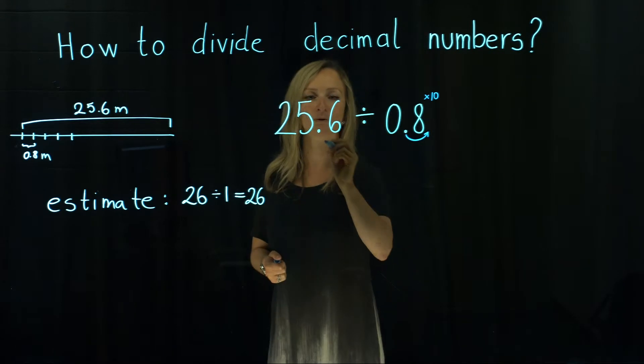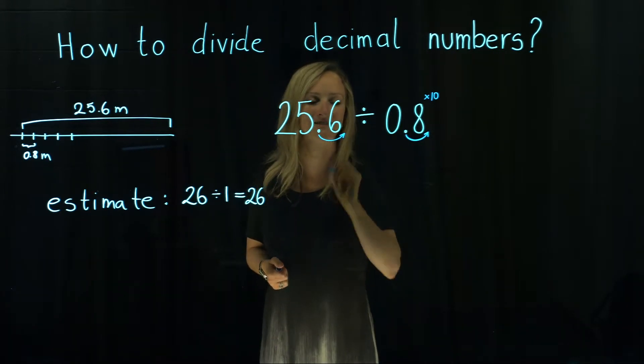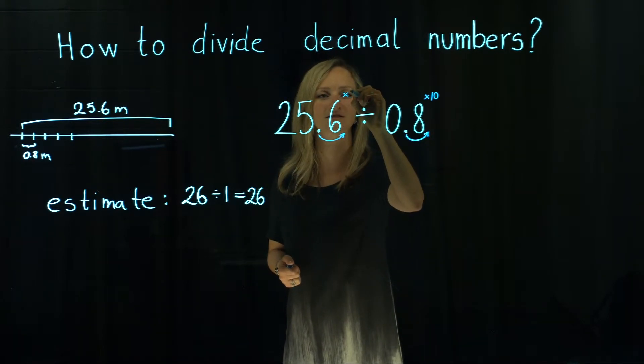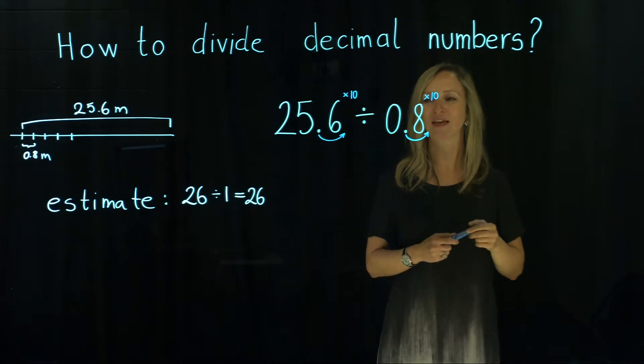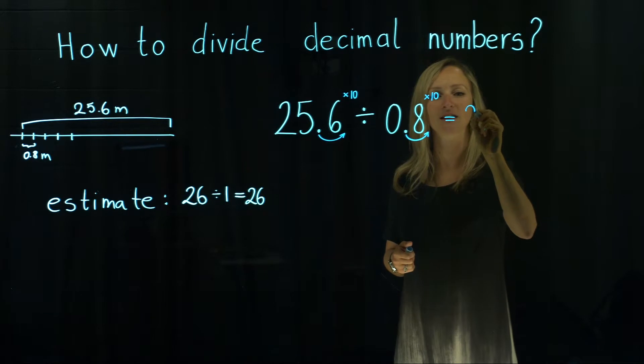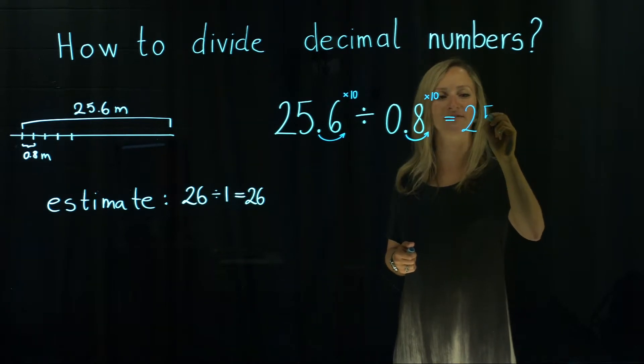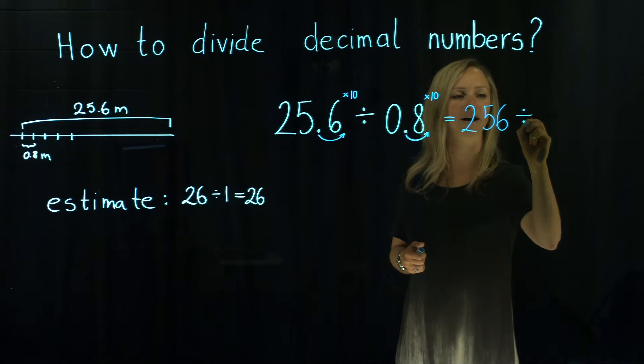But that we will get the right answer of the division, we need to do exactly the same thing with the first number. Which means we are timesing both numbers by 10. That's how we're going to get 256 divided by 8.